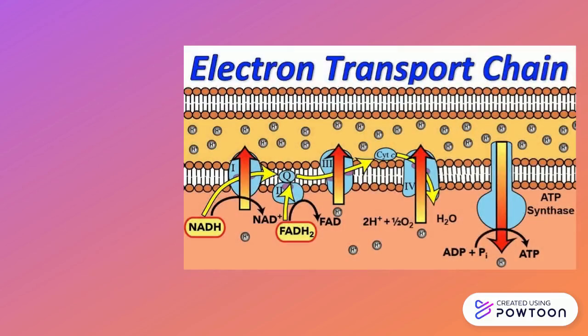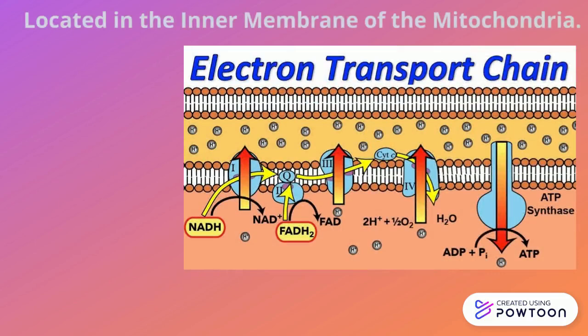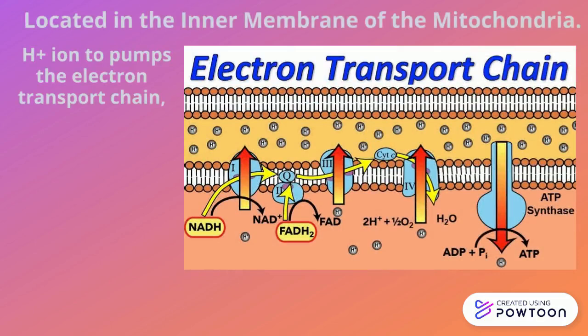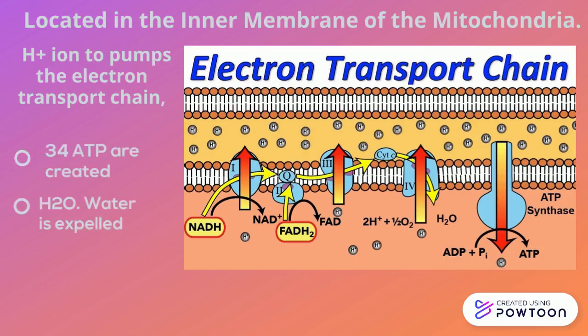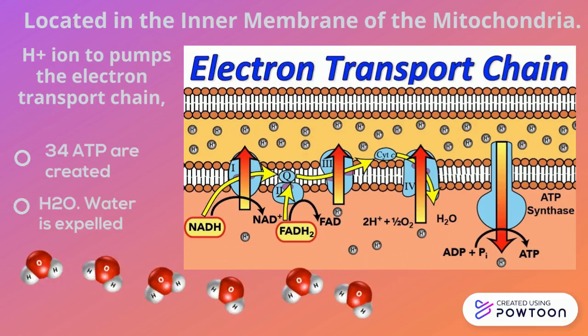The electron transport chain is located on the inner membrane of the mitochondria. The hydrogen ion pumps the electron transport chain, creating 34 ATP, and six water molecules are expelled.